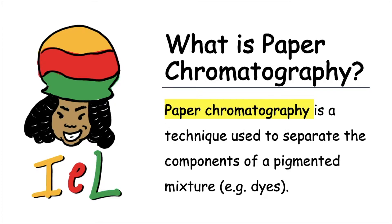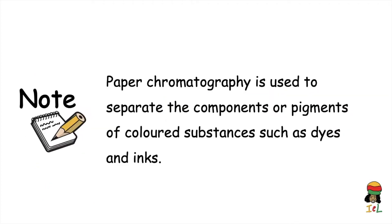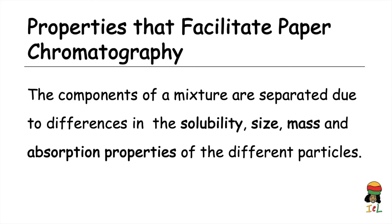First, we need to know what paper chromatography is. A suitable definition states that paper chromatography is a technique used to separate the components of a pigmented mixture, for example dyes. Keep in mind that paper chromatography is used to separate the components or pigments of colored substances such as dyes and inks.